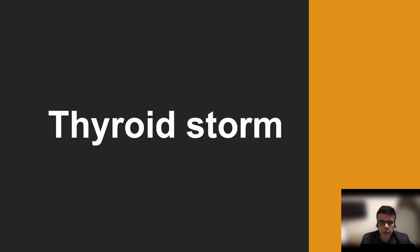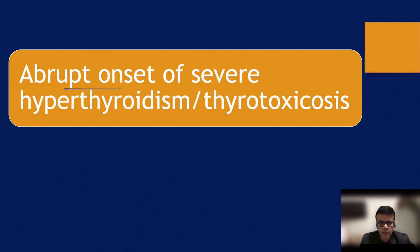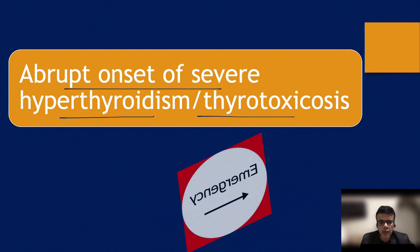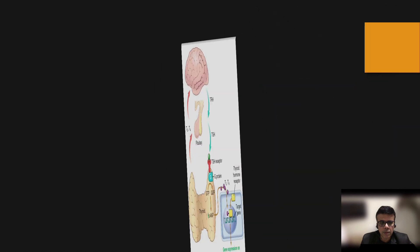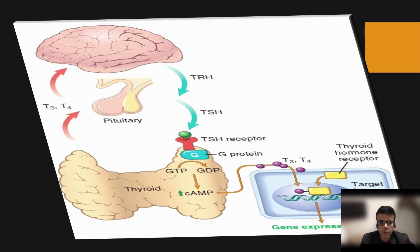Welcome in. Today we are going to discuss thyroid storm. Thyroid storm is an abrupt onset of severe hyperthyroidism or thyrotoxicosis — it is the most severe form of hyperthyroidism and generally a medical emergency that needs to be dealt with promptly. Let's have a look at thyroid hormone synthesis and action before going into thyroid storm.